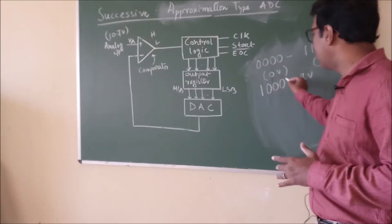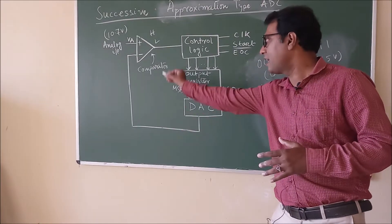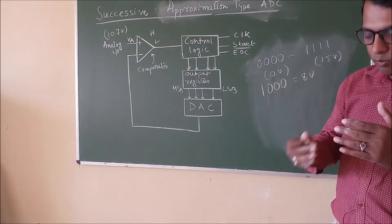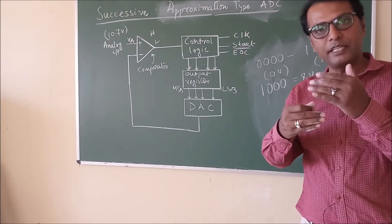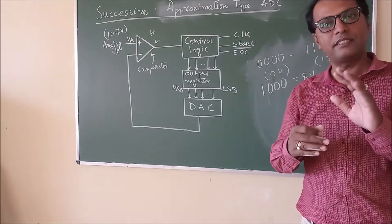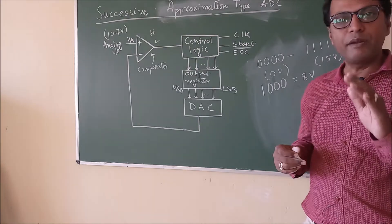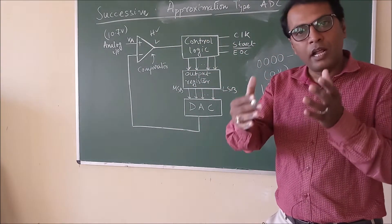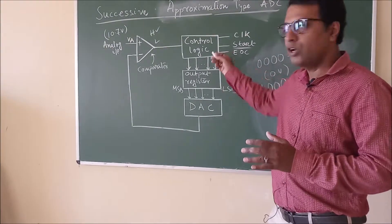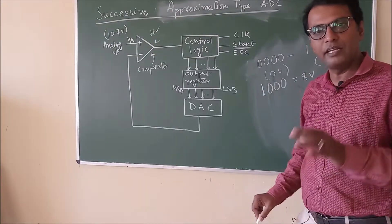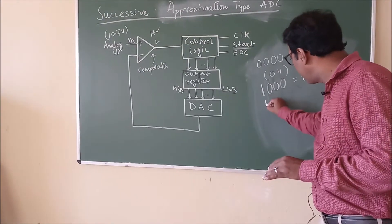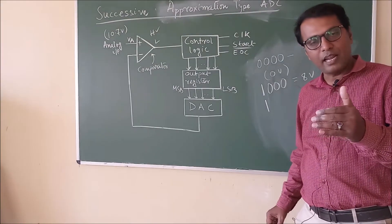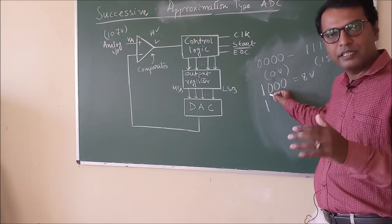The value 1000 is converted to an analog value by the DAC, and this 8 volts appears at the inverting terminal of the op-amp. The comparator compares these two values — 10.7V and 8V — and finds 10.7 is higher. It is applied at the non-inverting terminal, so the output of the comparator is high. Due to this high output, the control logic retains the bit we changed. That bit is retained for the next step.